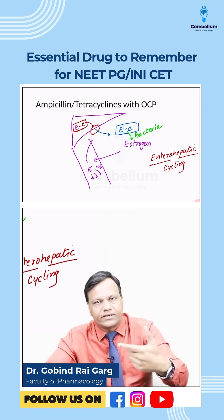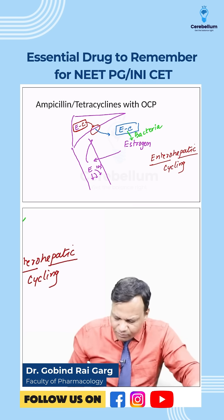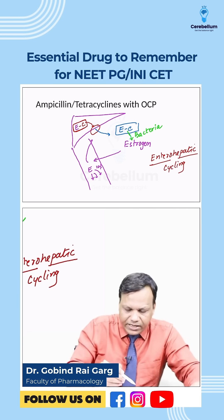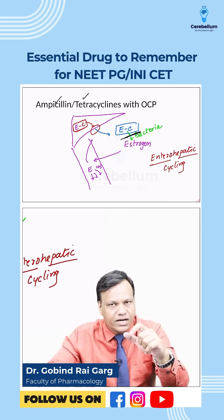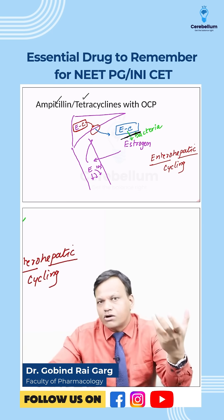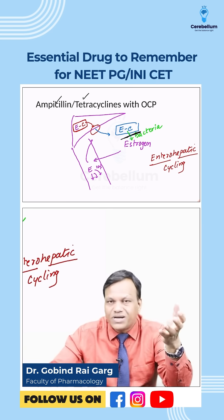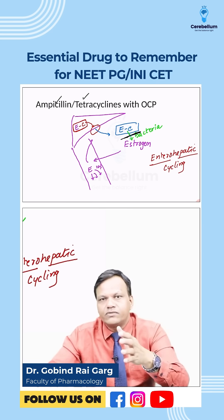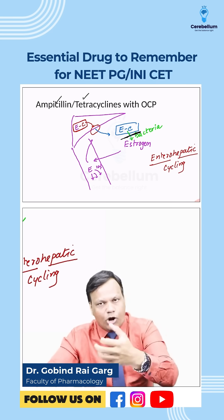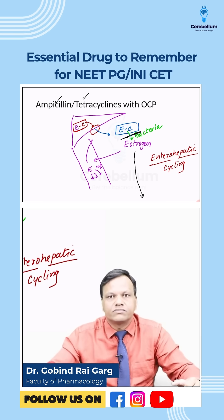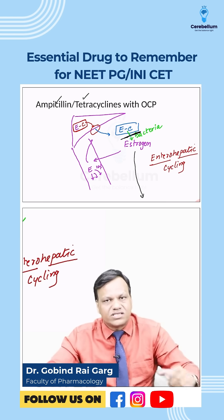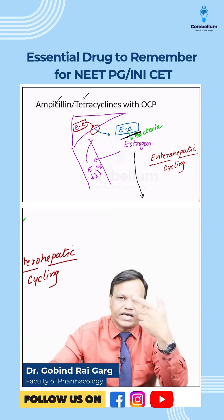When a broad-spectrum antibiotic like ampicillin or tetracycline is given, it kills the gut bacteria. With the bacteria eliminated, the deconjugating enzymes are absent, so conjugated estrogen cannot be converted back to free estrogen. Since it cannot be deconjugated, it cannot be reabsorbed.